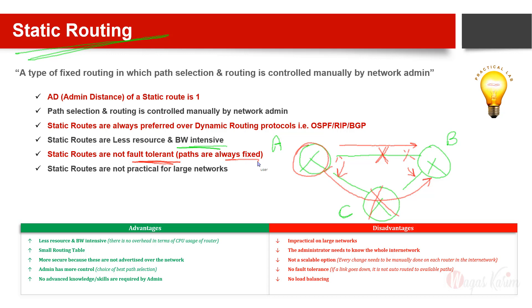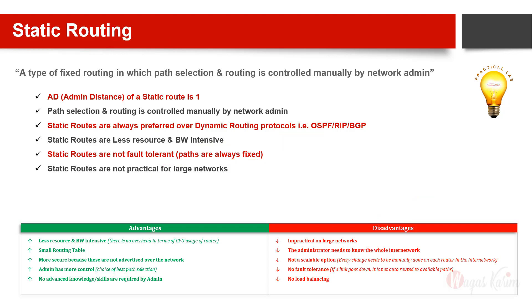Static routes are not practical for large networks. For ISPs like Vodafone, MTN, British Telecom, Bharti Telecom, Telenor, or AT&T, static routing is seldom used on the main network. It might be used in remote areas for small separate networks, but on the main network it is never used. Static routing is practical only for small networks.